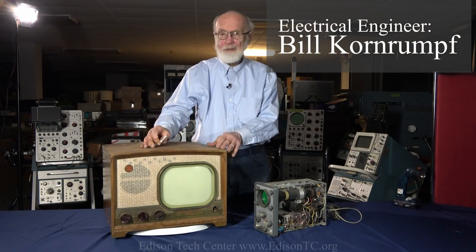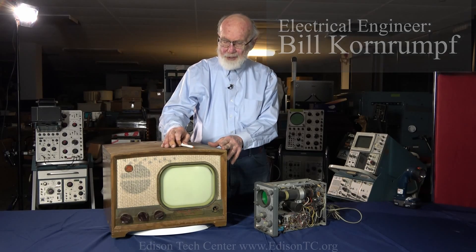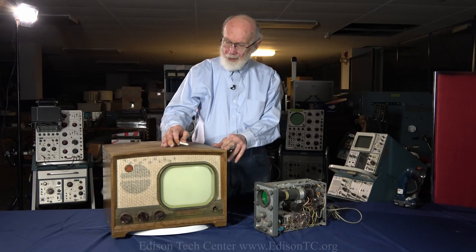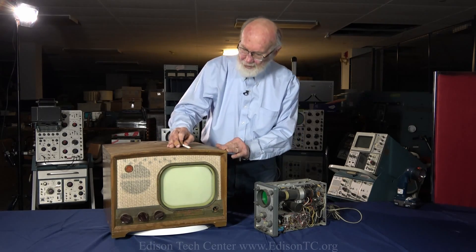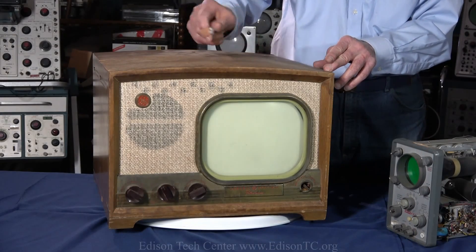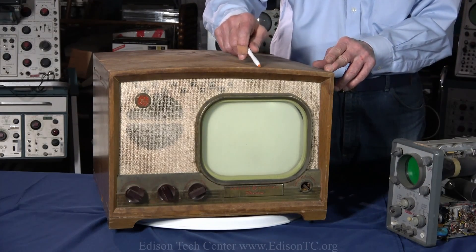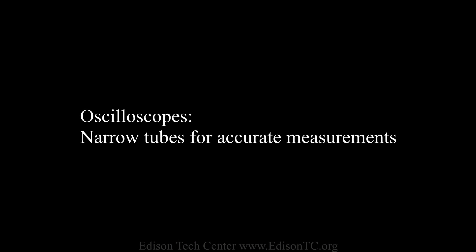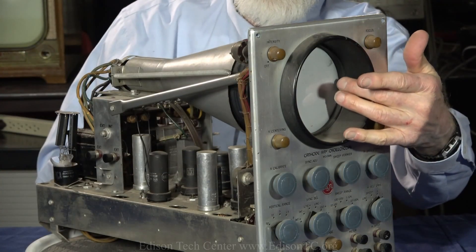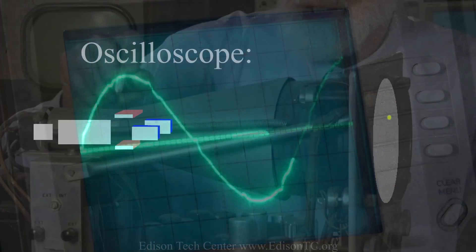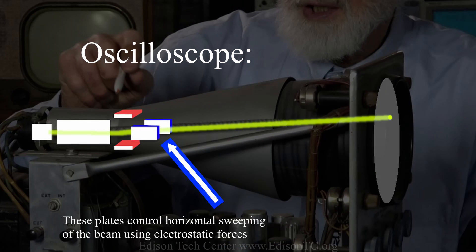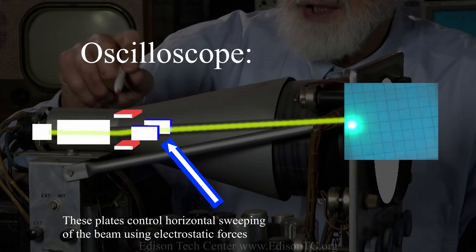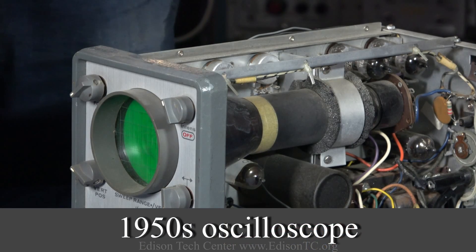One of the major differences between an oscilloscope and a television set is that the television really wants to have as big a picture as possible. This is a 1950s version television and you can see the CRT is much bigger than on an oscilloscope. The electrostatic system is limited in how far you can move the beam. If you get the plates too far apart so that they can move the beam more, you lose your linearity and you can't make scientific measurements.